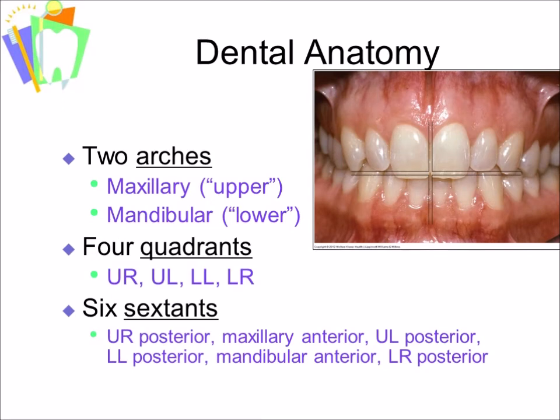We have two arches — the maxillary arch and the mandibular arch. When we divide the mouth into four quadrants, we divide those in half at the midline between teeth 8 and 9, and 24 and 25. Now we have four parts: upper right, upper left, lower left, and lower right.